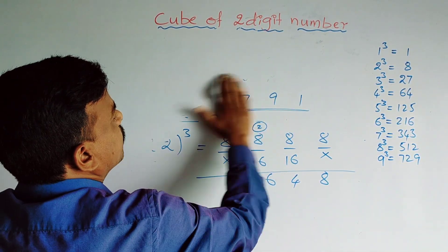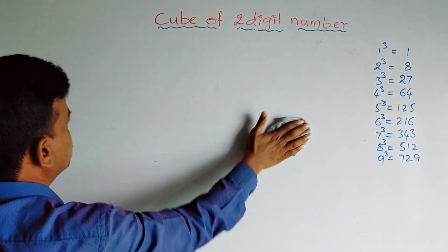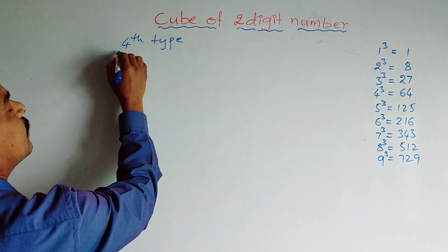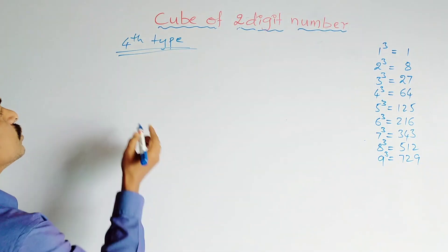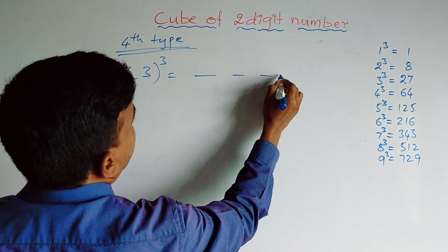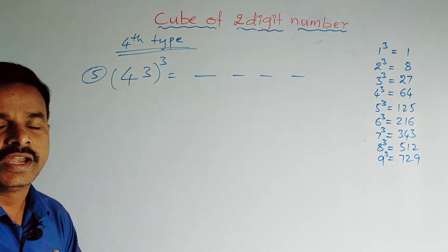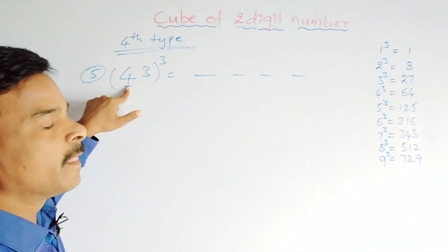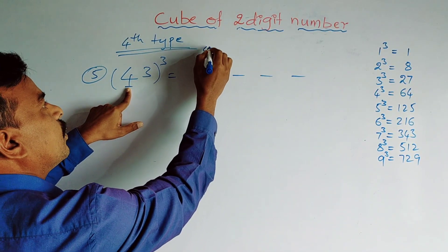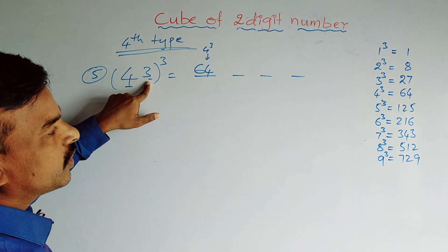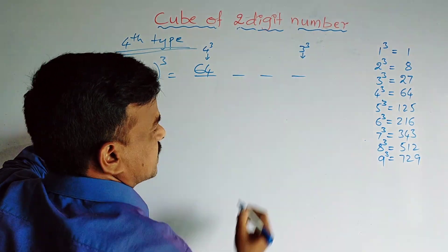Now we take the fourth type: numbers with different digits. I am taking 43 as an example. Here also 4 places. First, take the tens digit 4: write 4³ = 64 in the first place. Then take the units digit 3: write 3³ = 27 in the last place. These two places are completed; now we have to fill the middle places.